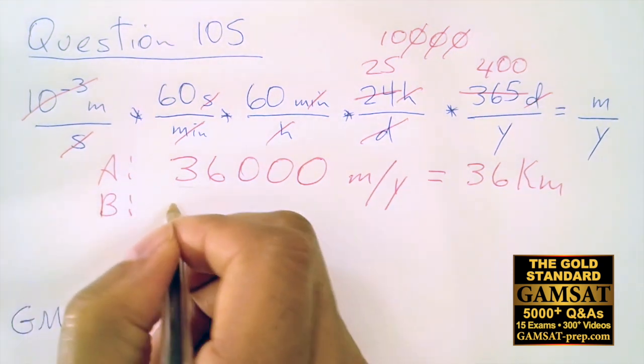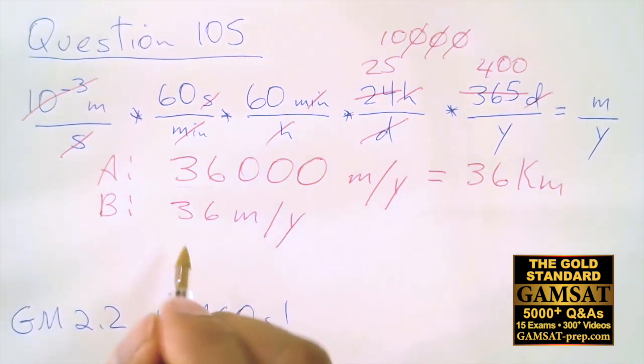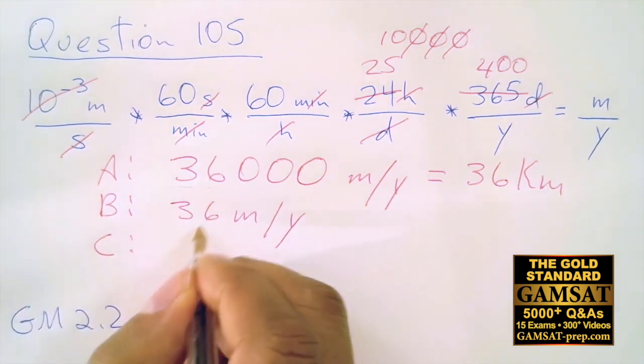Answer choice B is 1000 less. Again, this would be an extraordinary number for your nails to grow in one year. And then answer choice C is a thousand less.